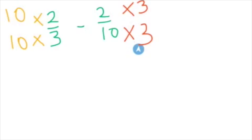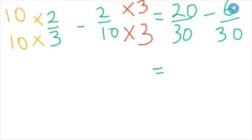And whatever we do to the bottom, we need to do to the top as well. So this becomes 10 times 2 is 20. 10 times 3 is 30 minus 2 times 3 is 6. 10 times 3 is 30. 20 minus 6 is 14. And remember that we do not subtract the denominator. We just write it again. So that becomes 30.